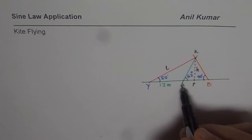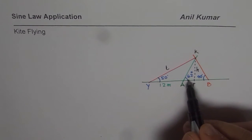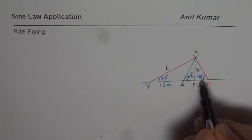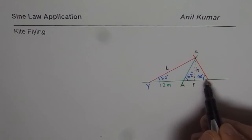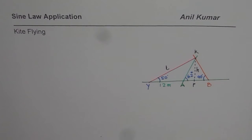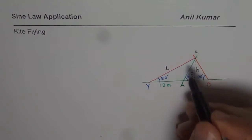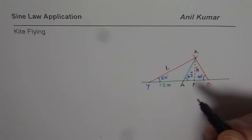Your friend who is approaching has an angle of elevation for the kite of 62 degrees, and the other friend following has an angle of elevation of 40 degrees. Now in this situation, how are you going to find the length of this kite string? One way is you can use the sine law.